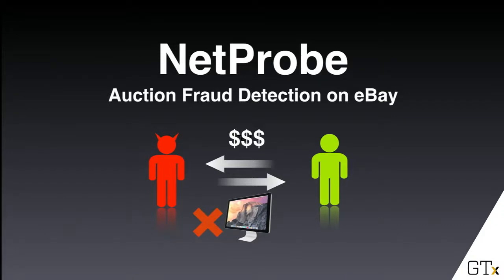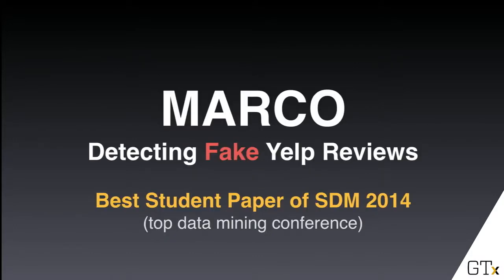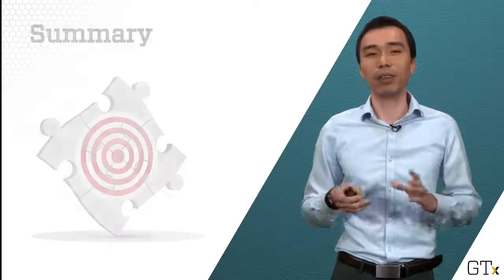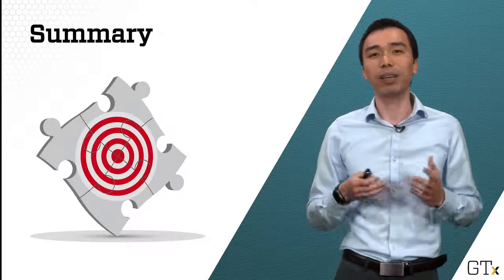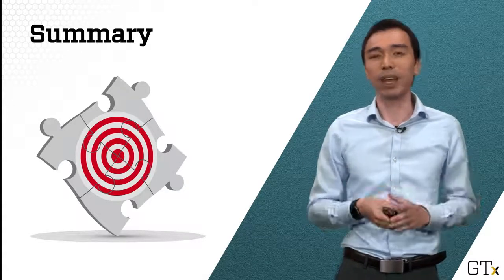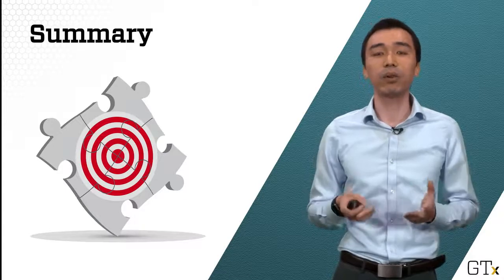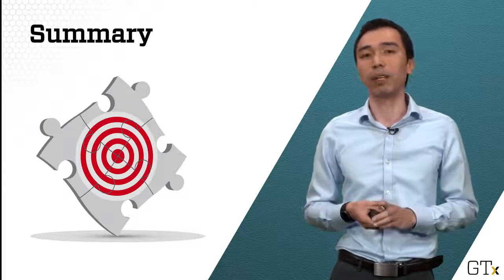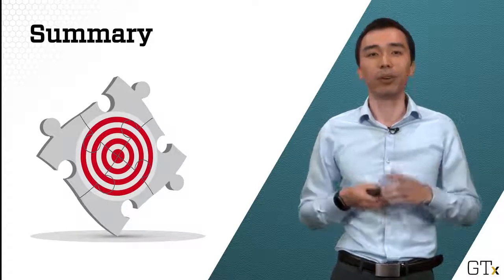Another example is finding fraud on eBay — where bad actors take your money but don't deliver items, a serious problem in auctions. We also extended our techniques to detecting fake reviews such as on Yelp, with a work called Marco — Marco Polo — which won the best paper award at SDM 2014. What we've looked at is what I do in my research group and how it relates to what you'll learn in this class. There are common themes on both the computation and visualization sides, which is why I'm really excited about teaching this class. I hope you will join me to explore and learn about these topics.